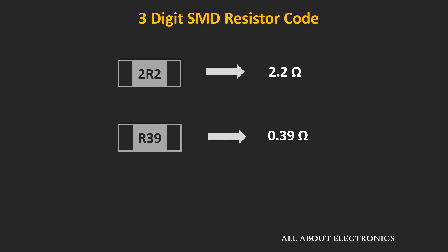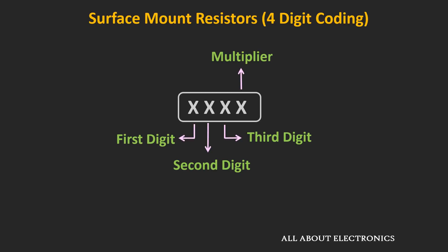Now let's look at the four-digit coding scheme. This is very similar to the three-digit coding scheme. In the four-digit coding scheme, the first three digits define the three most significant digits of the resistor value, while the last digit defines the multiplying factor for the resistor value.